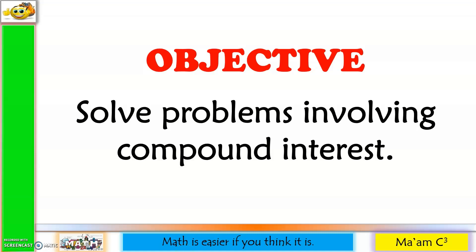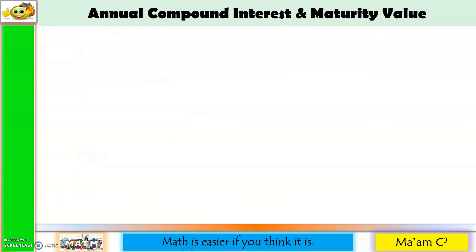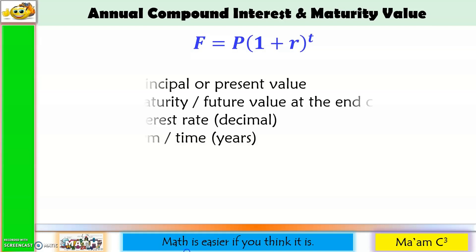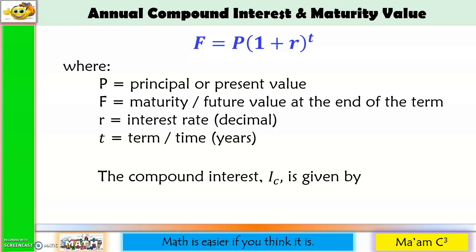Our objective in this lesson is to solve problems involving compound interest. Let us talk about annual compound interest and maturity value. Maturity value is given by the formula F is equal to P times the quantity 1 plus R raised to T, where P is the principal or present value, F is the maturity or future value at the end of the term, R is the interest rate expressed in decimal, and T is the term or time in years. The compound interest I sub C is given by the formula I sub C is equal to F minus P.